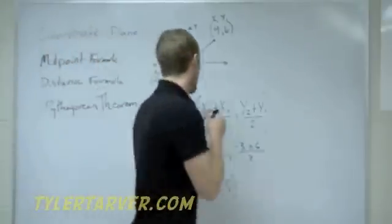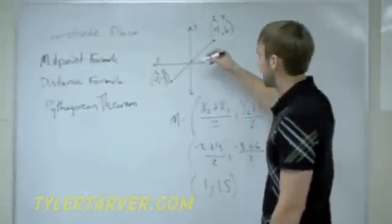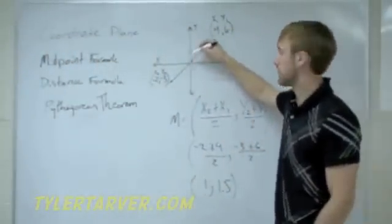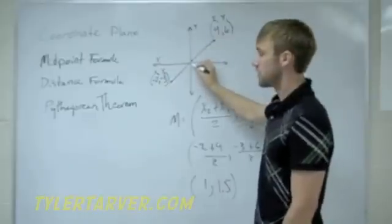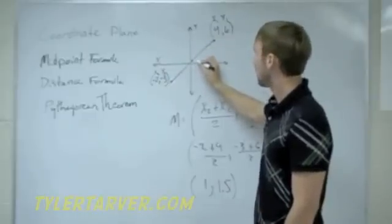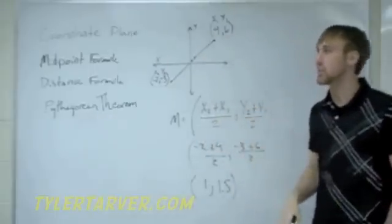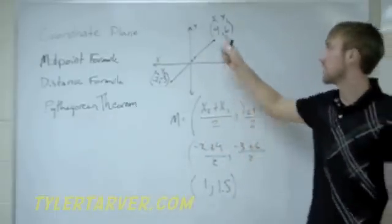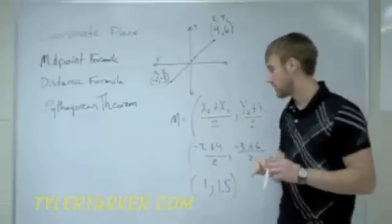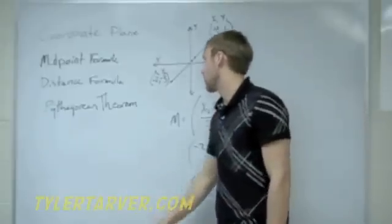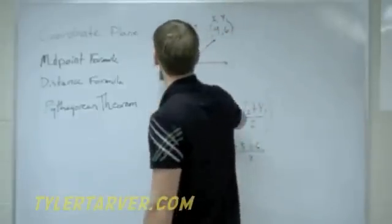That is the point where we can find on this line. Now, if you don't know how to graph a point, pay attention. You always start at the middle. We would go over 1, up 1.5. Your first move is always the X, and your second move is always the Y. Good deal. That's the midpoint.